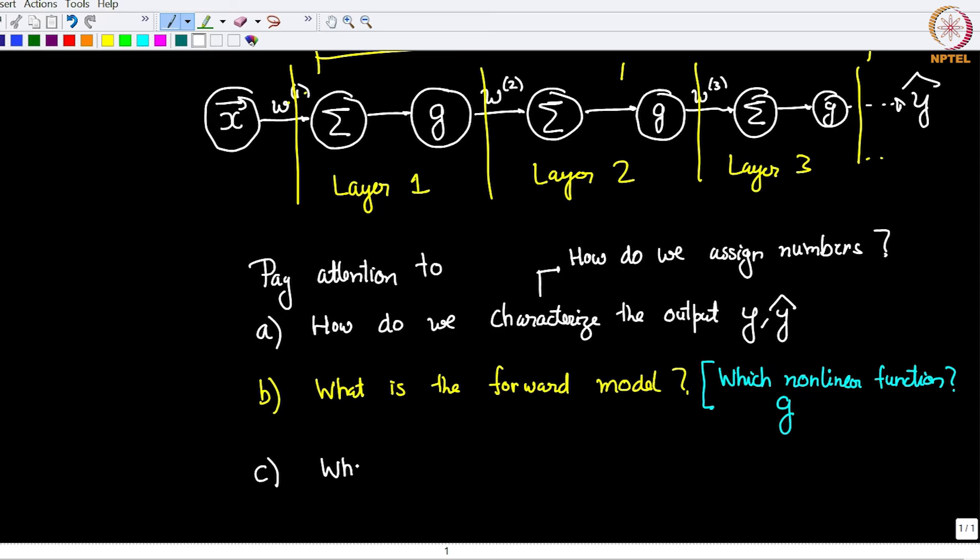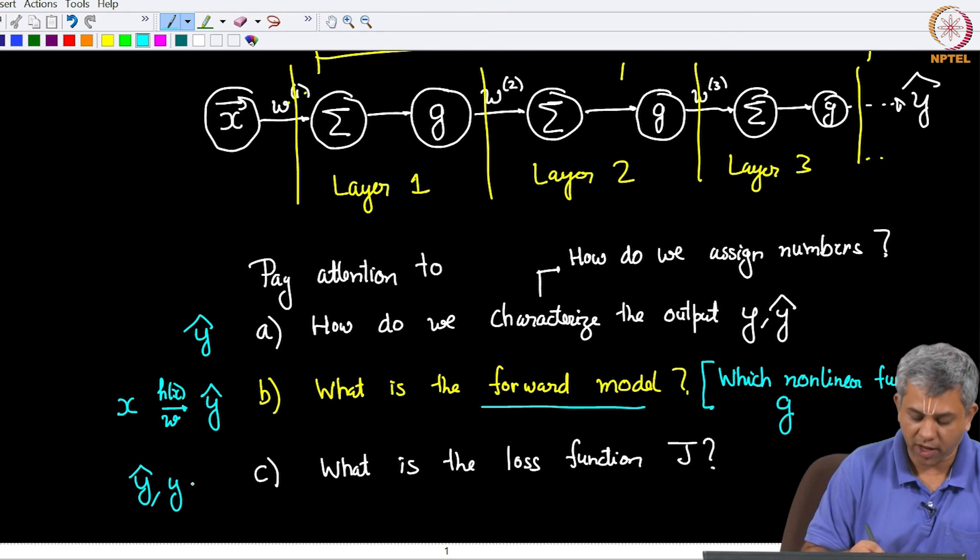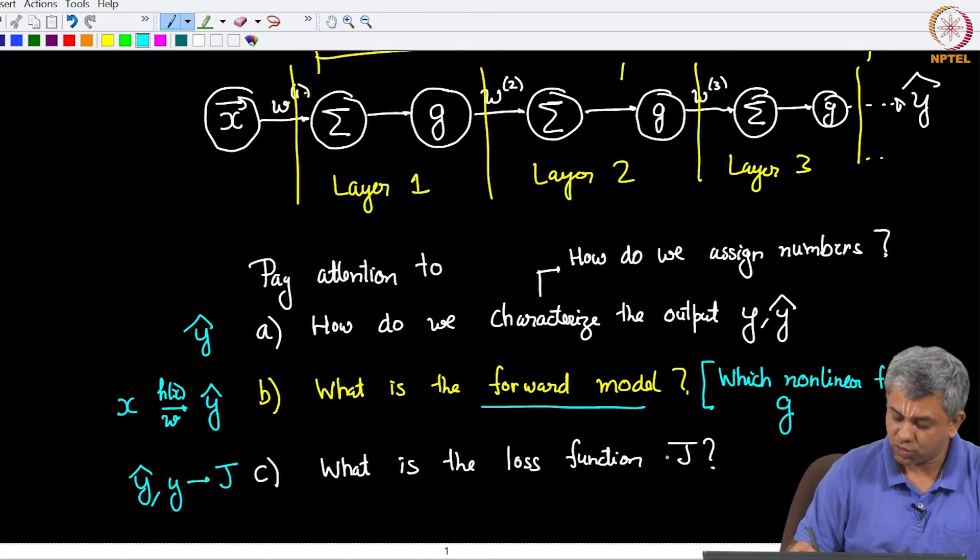The third thing is what is the loss function? So just to recapitulate, you have y hat. How do I give numbers to y hat? The second thing is how do I go from x to y hat, given that I have decided some numbers for x, some numbers for y? What the forward model decides is what is this function form? Remember we distinguish between the functional form versus the functional parameters. So how do we take this functional form from input to output? That is what you have to choose next. The third you have to choose is given that you have y hat and you have some ideal output y, how do I get j? So that is the third thing that you have to decide.